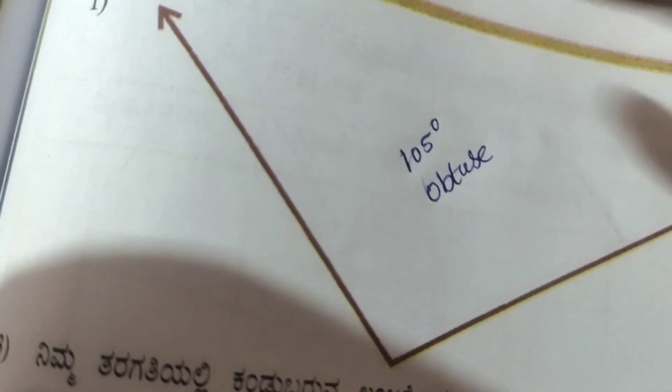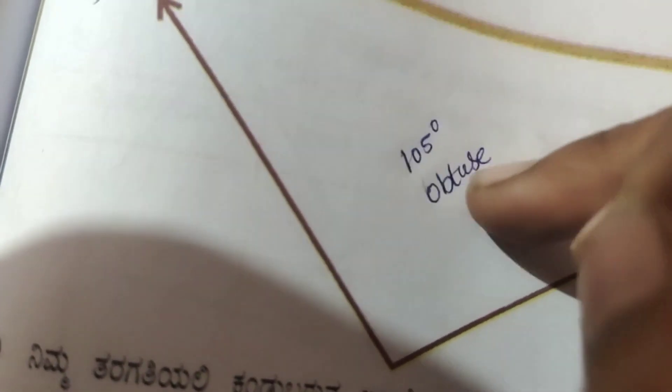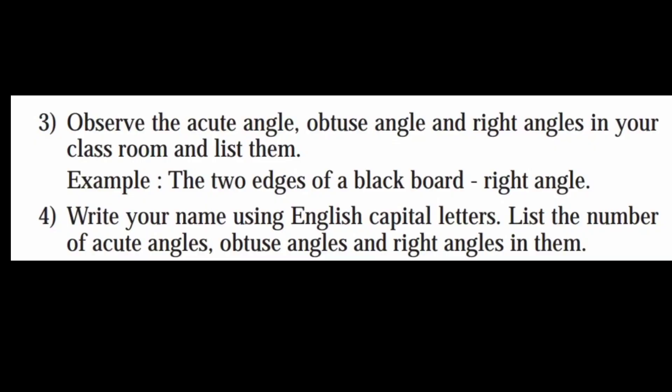Third question: observe the acute angles, obtuse angles, and right angles in your classroom and list them. Example: the two edges of a blackboard form a right angle. Students should look around their classroom and list the angles they find. Fourth question: write your name using English capital letters and list the number of acute angles, obtuse angles, and right angles found in them.